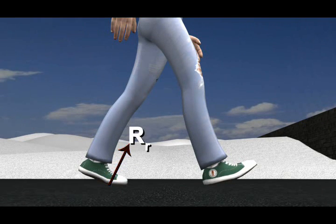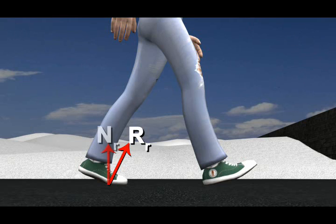The earth in turn exerts a reaction force on the man. This reaction force is equal and opposite to the pressing force and has two components. The vertical component is what we call normal reaction and the horizontal component is actually provided by friction.